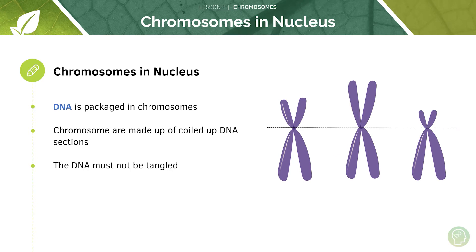A chromosome is made up of many coiled up sections of DNA. DNA is manipulated in multiple different ways as we'll see in later tutorials. Because the chromosome is made up of these very tightly coiled sections of DNA, when you are manipulating it — for example when you're replicating DNA — it is so important that DNA does not become tangled.